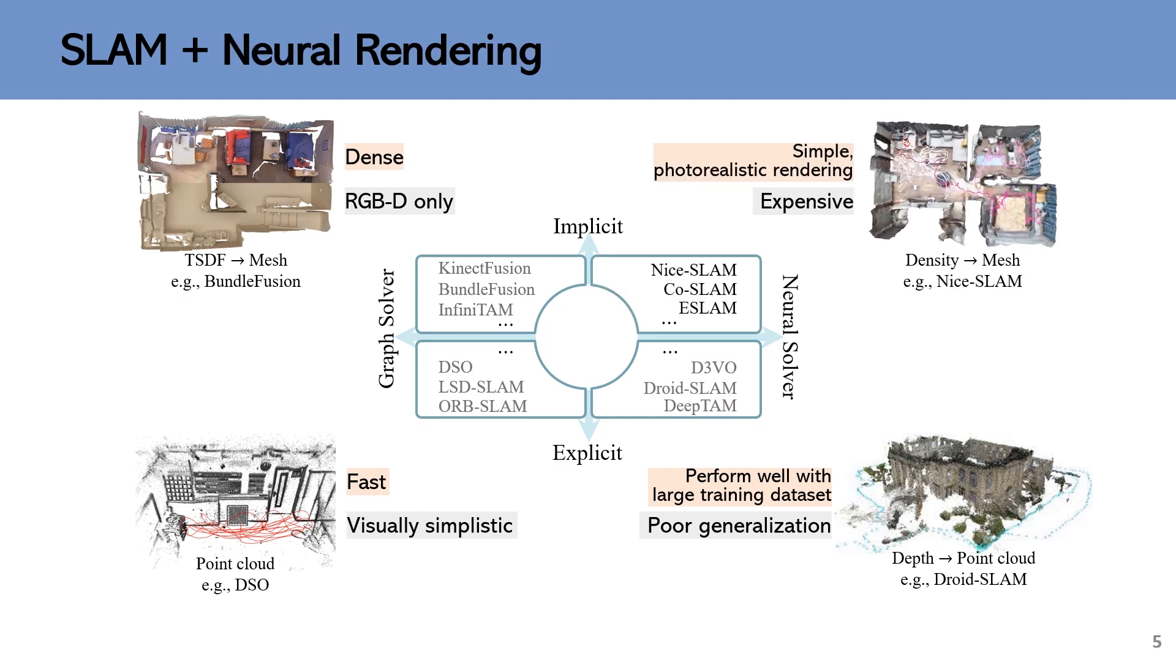Recently, some methods adopt NeRF for incremental mapping. In addition, they not only optimize radiance field representations, but also camera poses. However, jointly optimizing camera poses and radiance field representation is ill-conditioned.